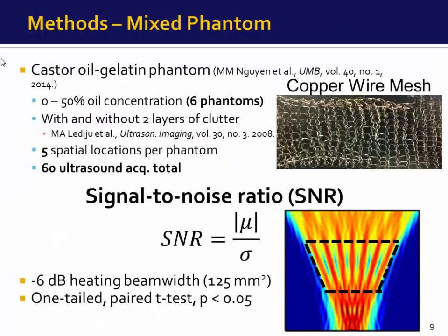Displacement was median filtered and strain was estimated using a first-order Savitzky-Golay filter with a 2 mm kernel for quantitative analyses and a 3 mm kernel for displayed images. To assess tracking performance, we created castor oil and gelatin phantoms with castor oil percentages ranging from 0 to 50 percent. We imaged these with and without two layers of clutter at five spatial locations per phantom, for 60 total acquisitions. Clutter was introduced by placing layers of copper mesh between the transducer face and the phantom. SNR was measured as the absolute value of mean strain divided by the standard deviation of strain within the 6 dB heating beam width area.